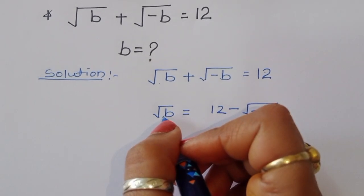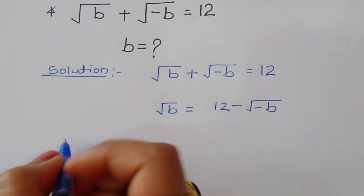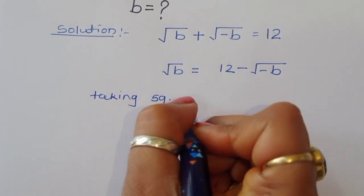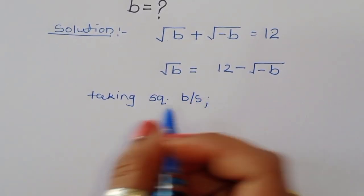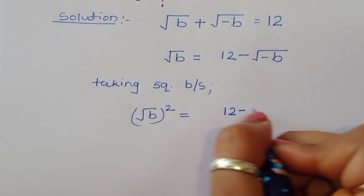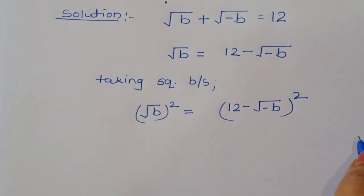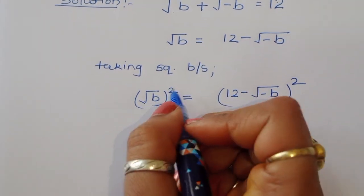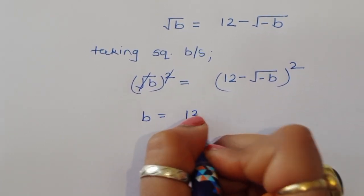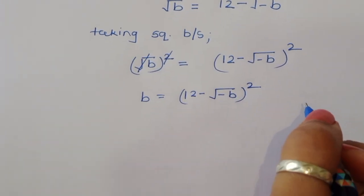To eliminate the square root, we take the square on both sides. So √b whole square is equal to (12 minus √(-b)) whole square. The square and square root cancel on the left, giving b = (12 minus √(-b))².